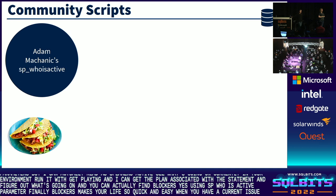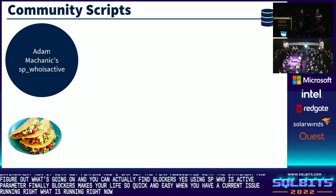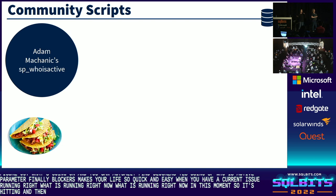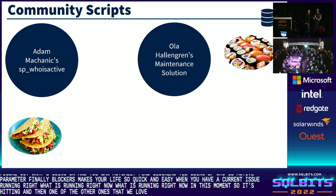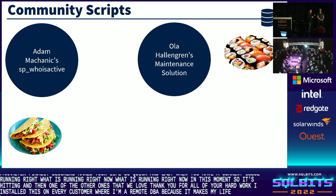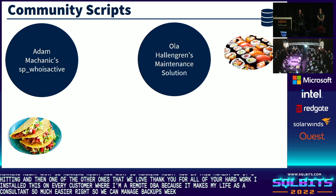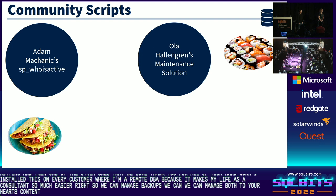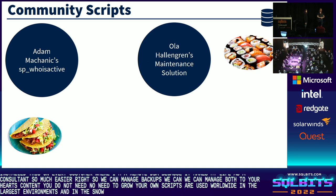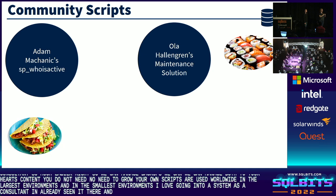It makes life so quick and easy when you have a current issue. If you download it and you're F5-ing and not seeing anything, that's okay — it's what is running right now in this moment. It's hitting DM_OS_WAITING_TASKS and joining to all of those other DMVs that we love. I grew up with Ola Hallengren's maintenance scripts. I install this on every customer where I'm a remote DBA because it makes my life as a consultant so much easier. We can manage backups, integrity checks, and index and statistics maintenance.